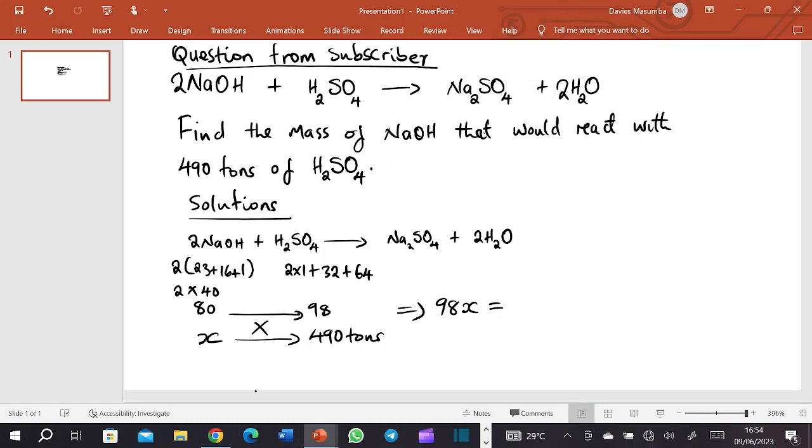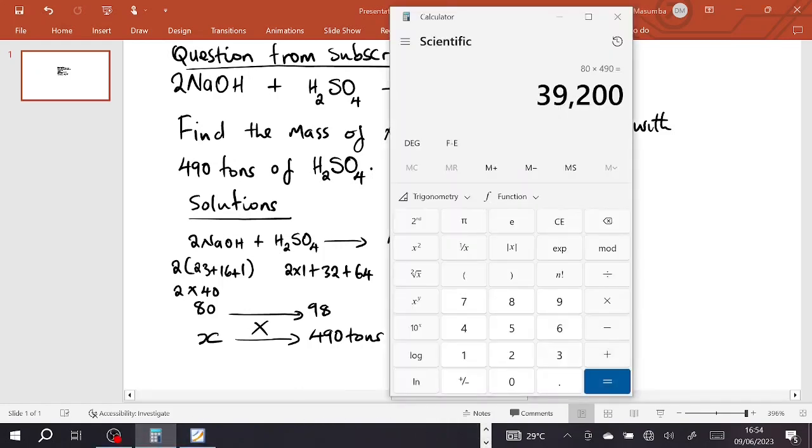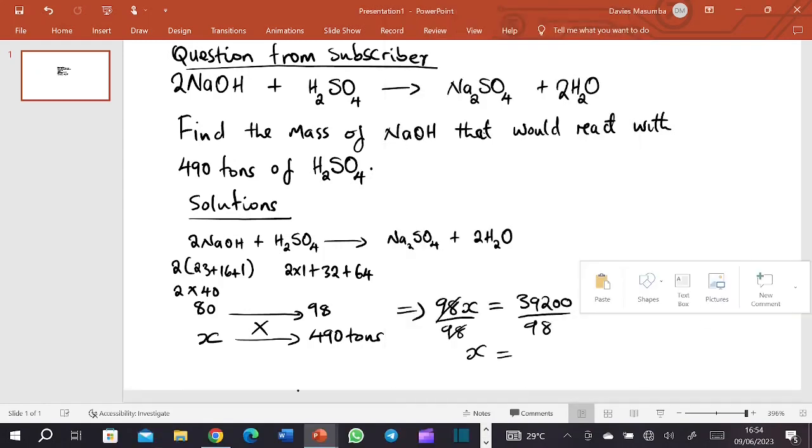So 39,200. Now we want x so divide by 98 even here by 98 so that will cancel, so we remain with x is equal to, so if we say 39,200 divided by 98 we are going to get 400. So it will be 400 and that will be tons. Now yeah, so that will be the answer. This is stoichiometry.